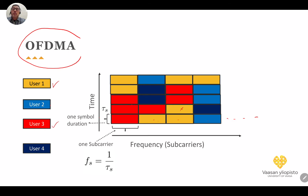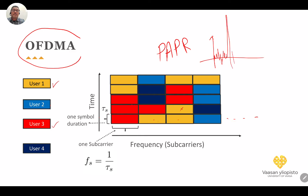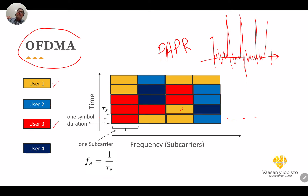There is one problem in OFDM that should be mentioned: Peak-to-Average Power Ratio (PAPR). This is related to the signal in the time domain — when you have an allocated OFDM signal, it has peaks in the time domain as well as low-amplitude portions.